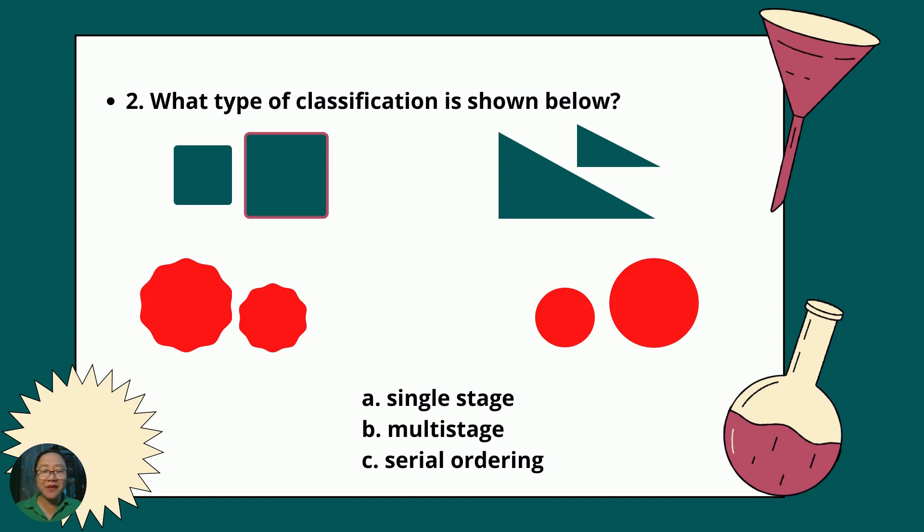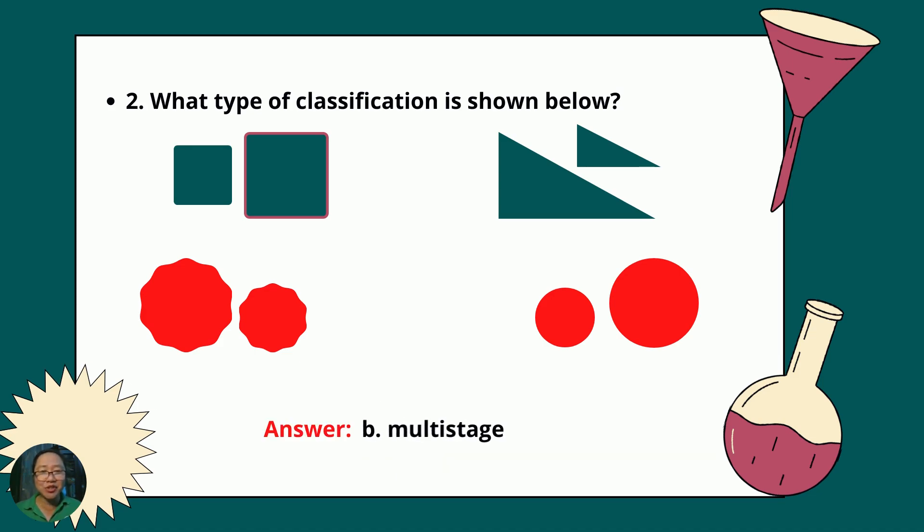Number 2, what type of classification is shown below? A, single stage; B, multi-stage; or C, serial ordering? What's your answer? The answer is B, multi-stage. Why multi-stage? Because there are already subsets here, and the organisms or the shapes are classified into groups like in terms of color and in terms of shape. For instance, in terms of color, that's one property. And then from the color, they are again grouped into two. We have the crooked circle and the smooth circle. Same true with the blue color. Aside from blue, they are also sorted in terms of shape like square and triangle. Hence, this number 2 is multi-stage.